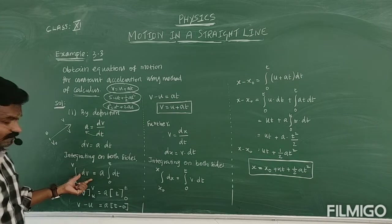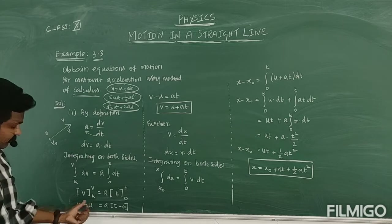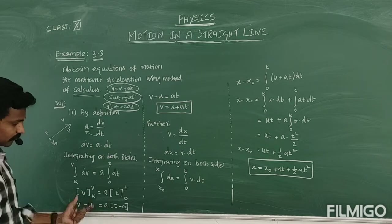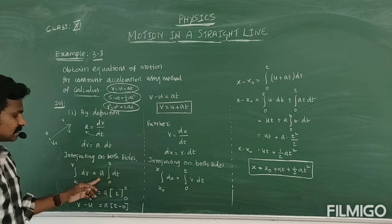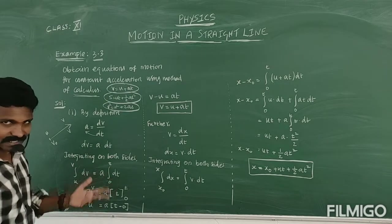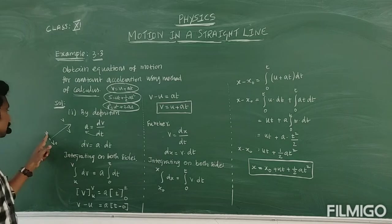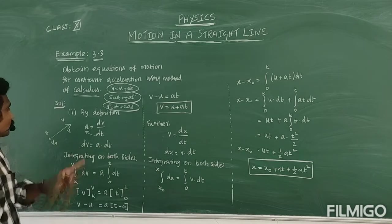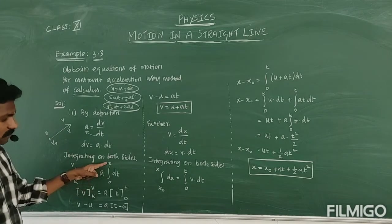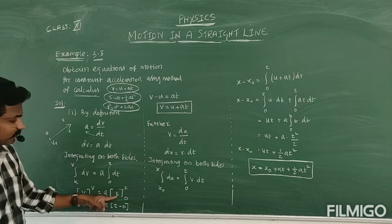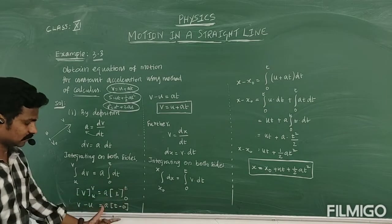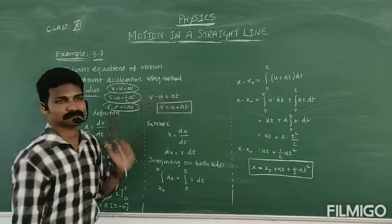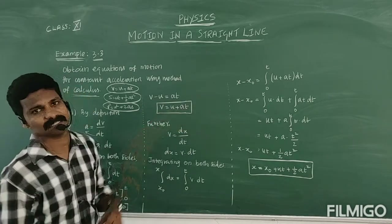Integral of dT gives T. Applying the limits — upper limit T minus lower limit 0 — gives T. So the right side becomes A into T. Therefore, V minus U equals A times T, which gives us V is equal to U plus AT. So we have derived the first equation.